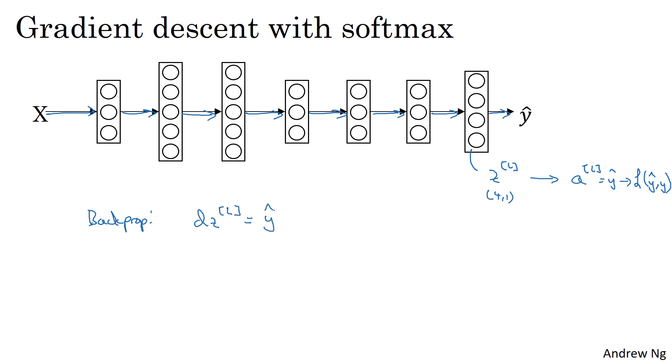Turns out that the key step or the key equation you need to initialize back prop is this expression: the derivative with respect to Z at the last layer. This turns out you can compute as y hat, the 4 by 1 vector, minus y, the 4 by 1 vector. So you notice that all of these are going to be 4 by 1 vectors when you have four classes, and C by 1 in the more general case.